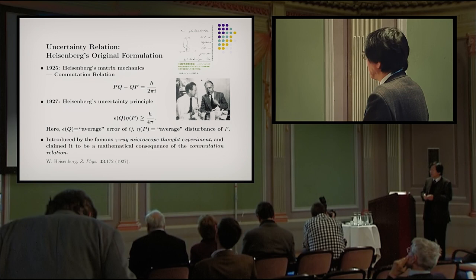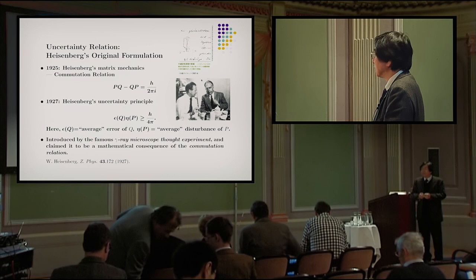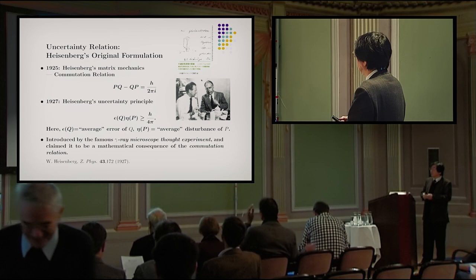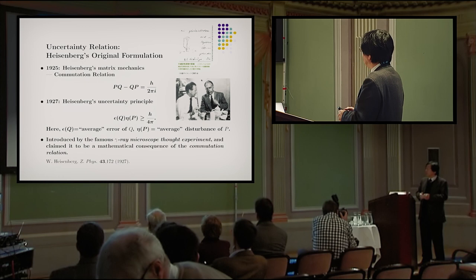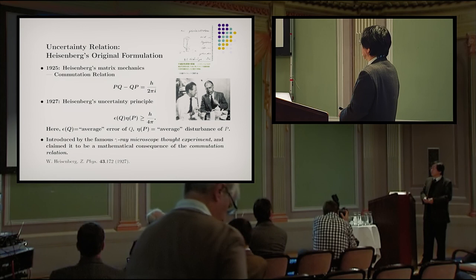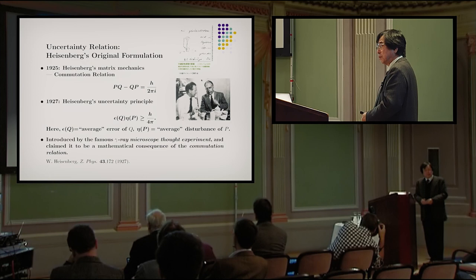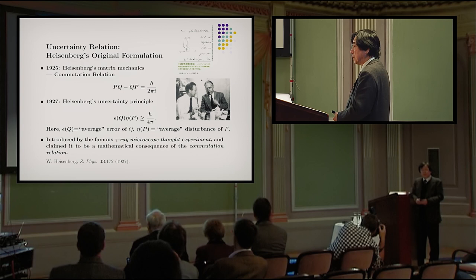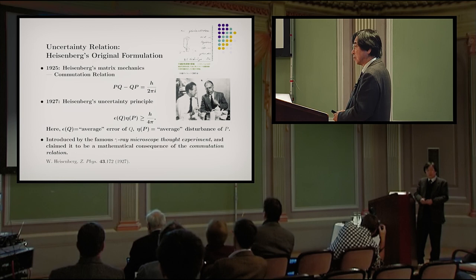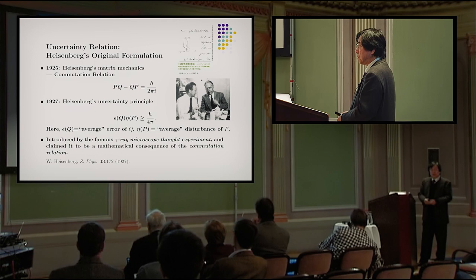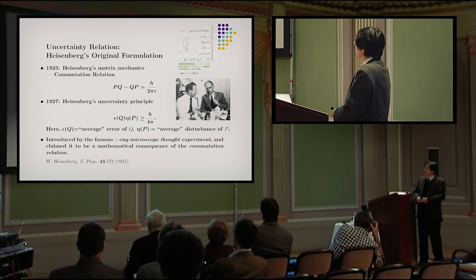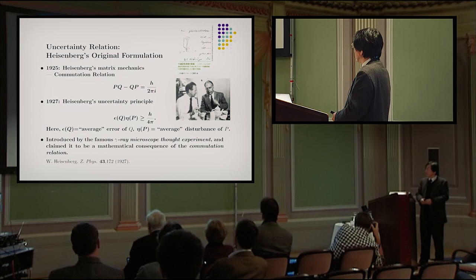First of all, I'd like to explain about the uncertainty relation in Heisenberg's original formulation. In 1925, Heisenberg found matrix mechanics, in which he found a commutation relation between momentum and position observable: PQ minus QP equals H over 2πi. This commutation relation formally plays a role to produce discrete energy from continuous position and continuous momentum variables. However, its operational or physical meaning was not so clear at that time.